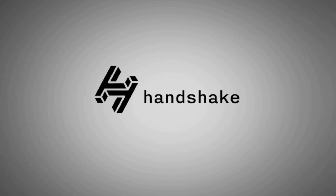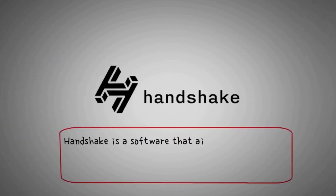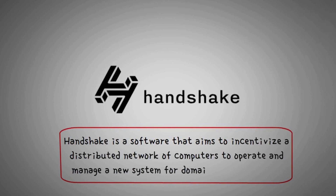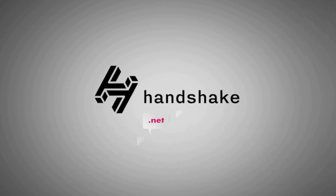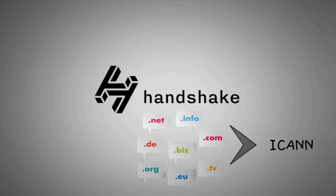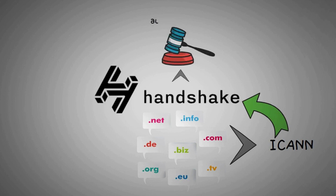What is Handshake? Handshake is software that aims to incentivize a distributed network of computers to operate and manage a new system for domain name ownership. Today, website addresses are governed by a non-profit body called ICANN, which sets standards for what letter combinations can be used after the dot in any domain, such as .com, .org, .net, and many other varieties. Handshake seeks to replace ICANN's role as central authority for creating and issuing top-level domains with an open auction system operated by its computing network.